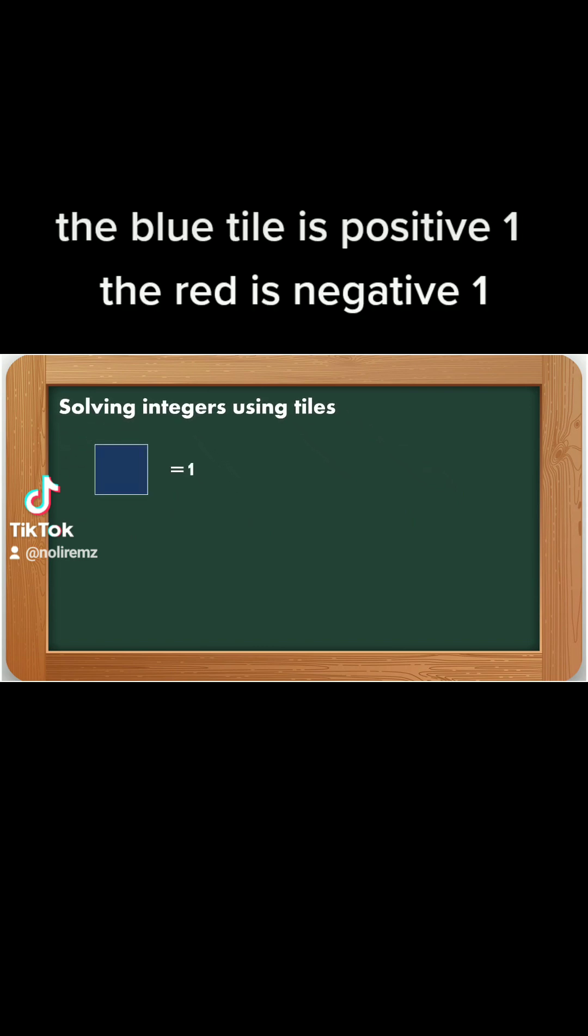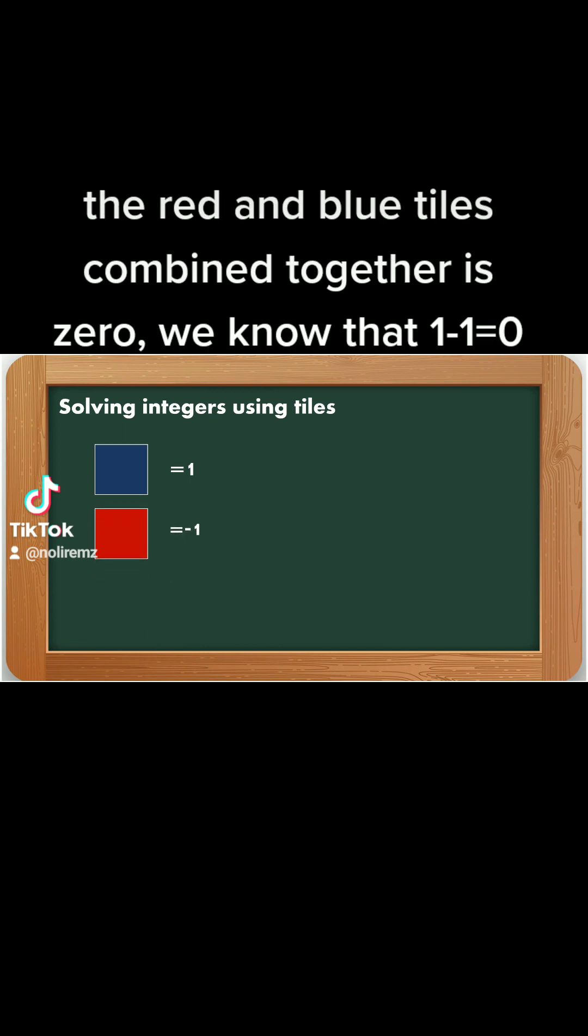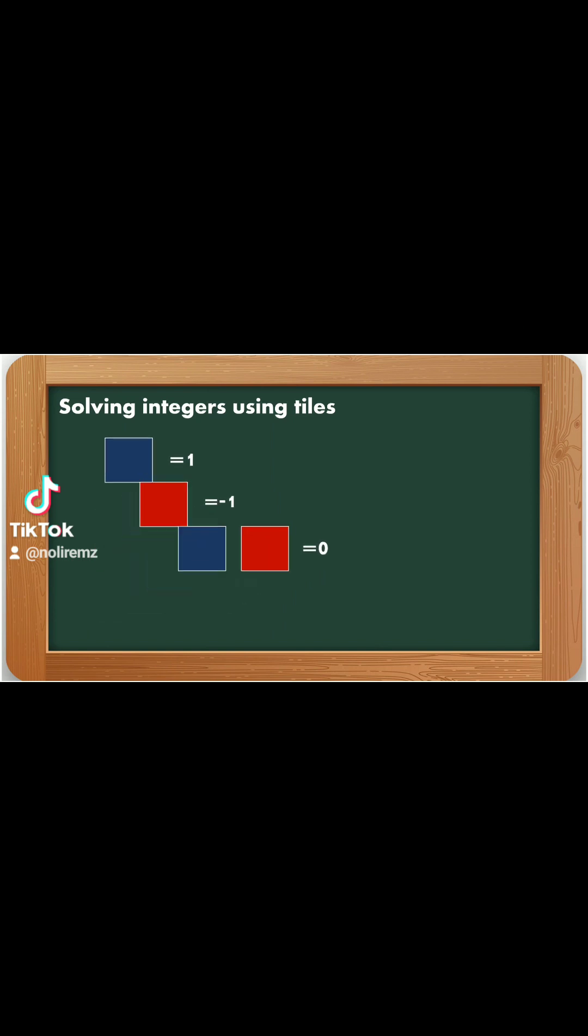The blue tile is positive 1. The red is negative 1. The red and blue tiles combined together is 0. We know that 1 minus 1 equals 0.